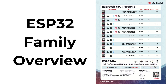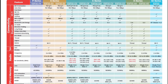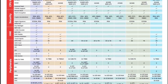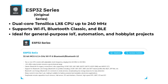ESP32 family overview. The ESP32 family includes several chip variants, each tailored for specific use cases — from general-purpose IoT to ultra-low-power wireless and AI applications. Here's a breakdown of the main ESP32 series and their key features. The original ESP32 series features a dual-core Xtensa LX6 CPU up to 240 MHz, supports Wi-Fi, Bluetooth Classic and BLE. Ideal for general-purpose IoT, automation and robust projects.